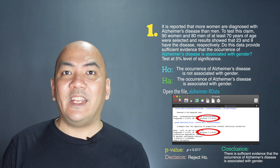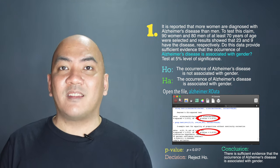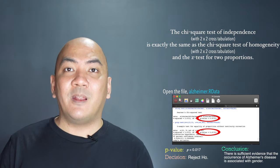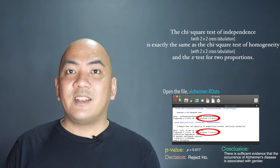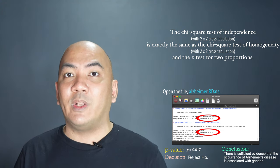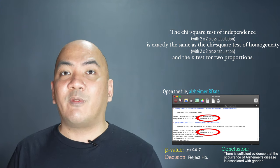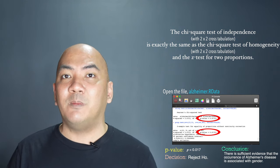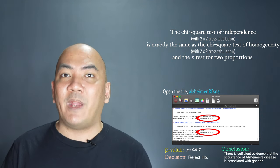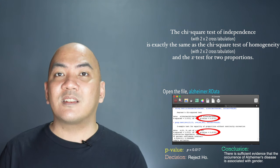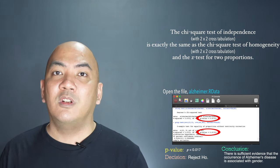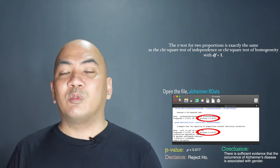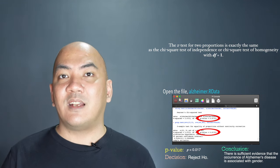Since the p-values of chisq.test and prop.test are equal, this shows that the chi-square test of independence with a 2x2 table is equivalent to the chi-square test of homogeneity with a 2x2 table and the z-test for two proportions. In other words, the z-test for two proportions is exactly the same as the chi-square test for 2x2 tables, or when the degrees of freedom in the chi-square test equals 1.